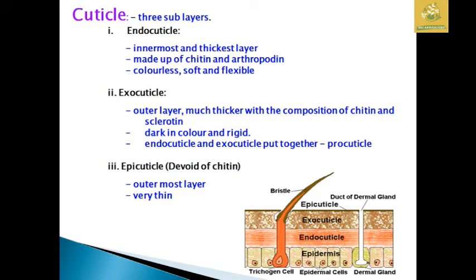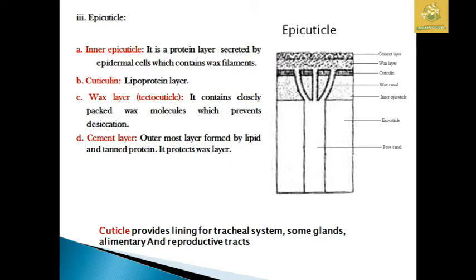The epicuticle is very thin — it is a semi-variable membrane between the exocuticle and the outer layer. It consists of an inner epicuticle, which is a protein layer secreted by epidermal cells and mainly consists of wax and cuticulin. The second sublayer is the wax layer, a lipoprotein layer found via duct glands, also known as the tecto-cuticle layer; it is closely packed with wax molecules, preventing desiccation and reducing water loss. The cement layer is formed in the upper portion of the wax layer, made of lipid and tanned proteins, protecting the wax layer from degradation. The cuticle also lines glands and the alimentary canal in the insect body.